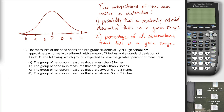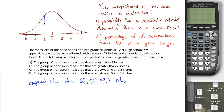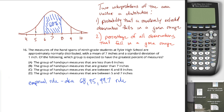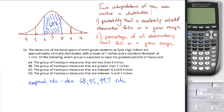There are at least two different ways to answer this question. One way is using the empirical rule, also known as the 68-95-99.7 rule. That tells you that 68% of the area underneath the normal distribution falls within one standard deviation of the mean. So the mean is 7 — one standard deviation below to one standard deviation above comprises 68% of the total area underneath the curve.